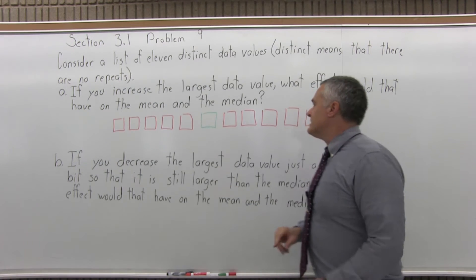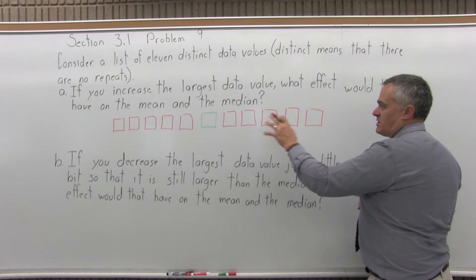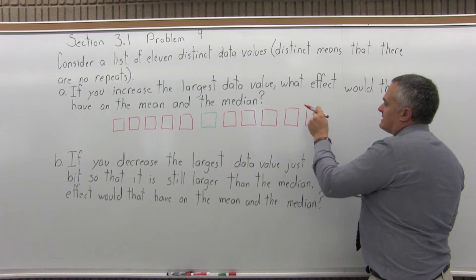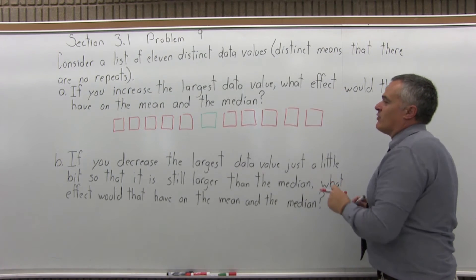Part A says, if you take the largest value, I'm assuming the boxes are in increasing order, so this one would be the largest value, and we increase it. Let's say it's 88, we make it 95, whatever it is.